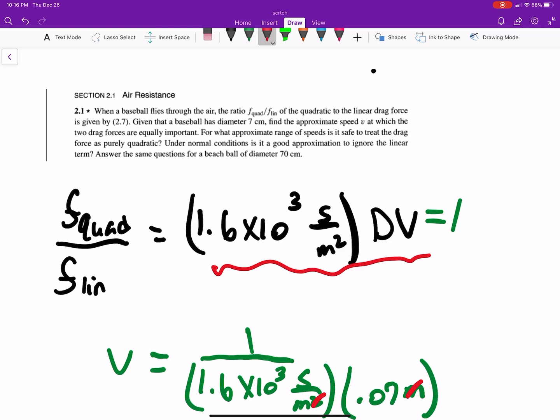Given the baseball has a diameter of 7 centimeters, find the approximate speed v at which the two drag forces are equally important. For what approximate range of the speed is it safe to treat the drag force as purely quadratic? Under normal conditions, is it good to approximate to ignore the linear term? Answer the same question for a beads ball.